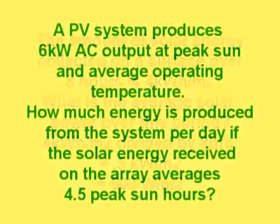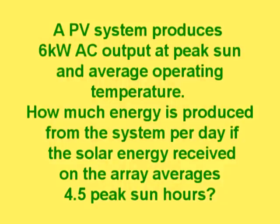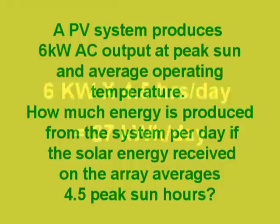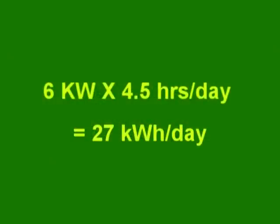A PV system produces 6 kilowatt hours AC output at peak sun and average operating temperature. How much energy is produced from the system per day if the solar energy received on the array averages 4.5 peak sun hours? 6 kilowatt hours times 4.5 hours per day equals 27 kilowatt hours per day.